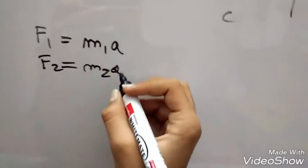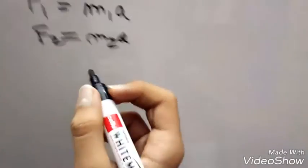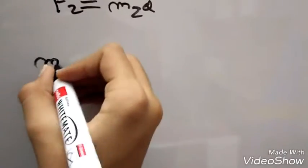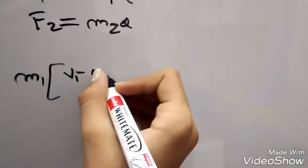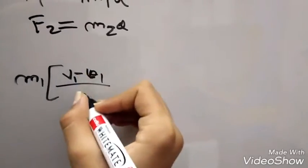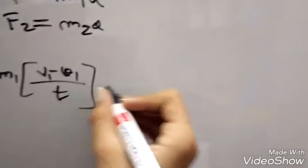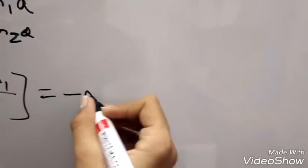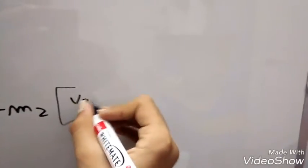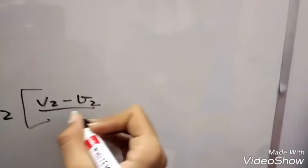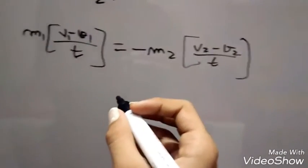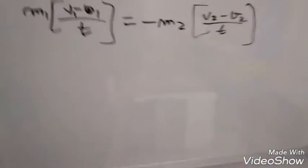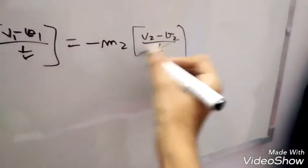We will replace a with (v minus u) upon t. So m1 times (v1 minus u1) upon t equals minus F, m2 times (v2 minus u2) upon t. Why have I put minus here? Newton's third law says that F1 equals minus F2. Now t and t will cancel.